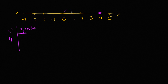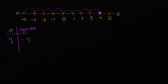Well, positive four is four to the right of zero. So its opposite is going to be four to the left, which is negative four. Or another way to think about it: if you have a positive number, its opposite is going to be the negative of that number.